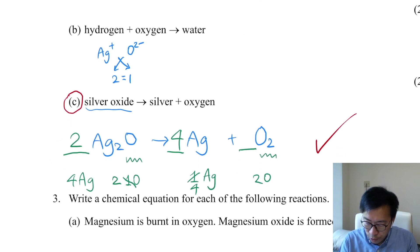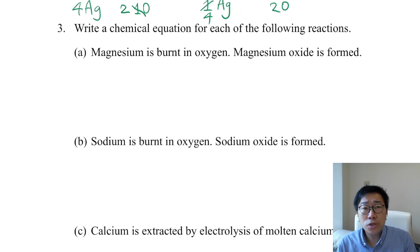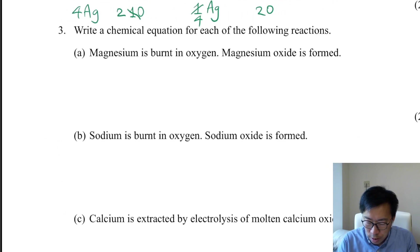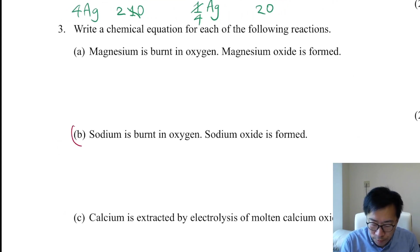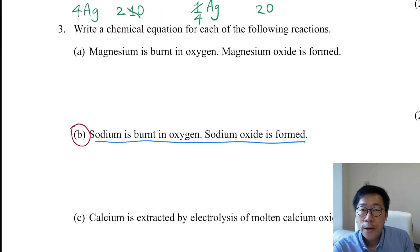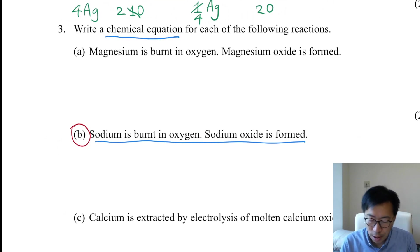Next, let's move on to question number 3, which is another practice. This time, I will work on part B. You are provided with a description — not a word equation. You have to extract the important information about the reactants and products, then write a balanced chemical equation.